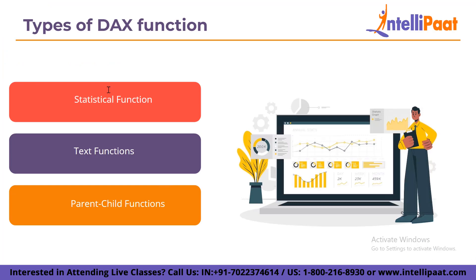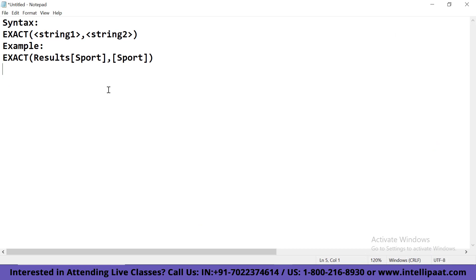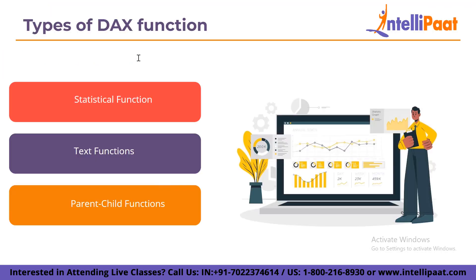The next function is text functions. Text functions allow the user to work with strings in tables and columns. You can get a substring, perform different operations like string concatenation. Some of these functions include DAX EXACT, DAX CONCATENATE, and DAX FIND. For example, the EXACT function is a case-sensitive function that compares two given strings. It returns true if they are exactly the same, otherwise it returns false. The syntax is: EXACT(string1, string2). For example, EXACT("sport", "sport") will return true since both values are the same.